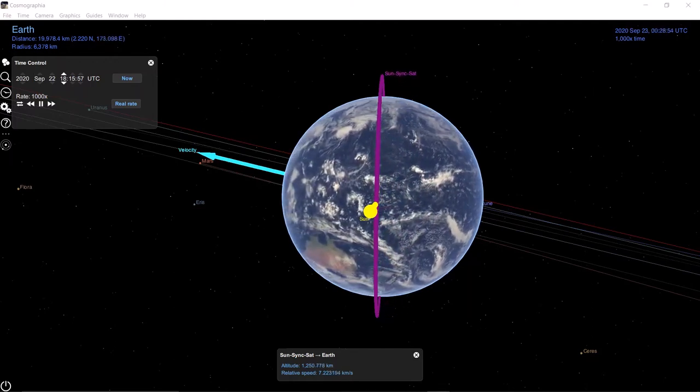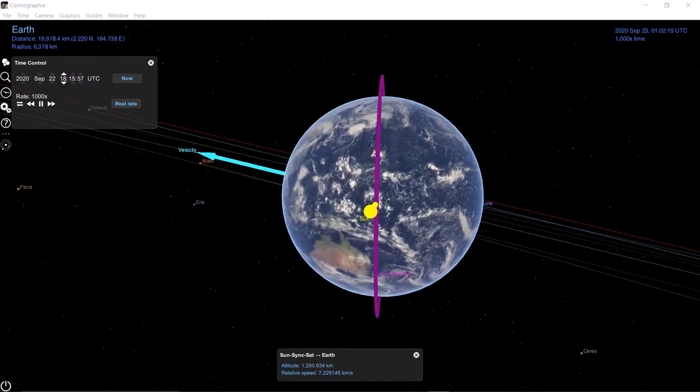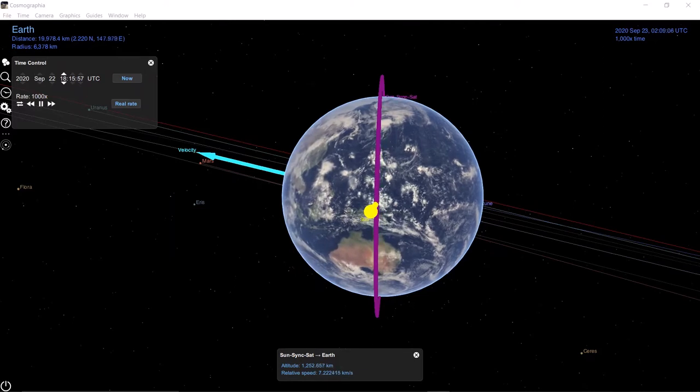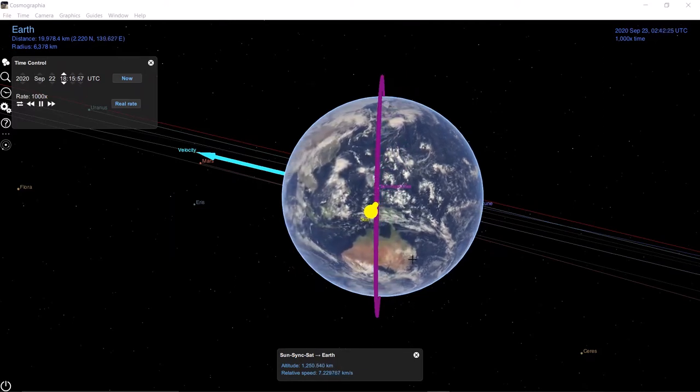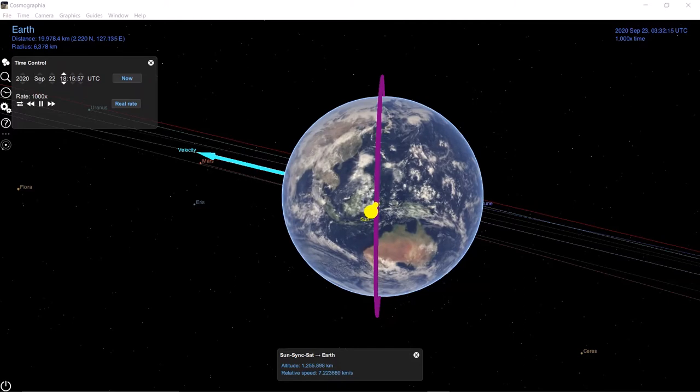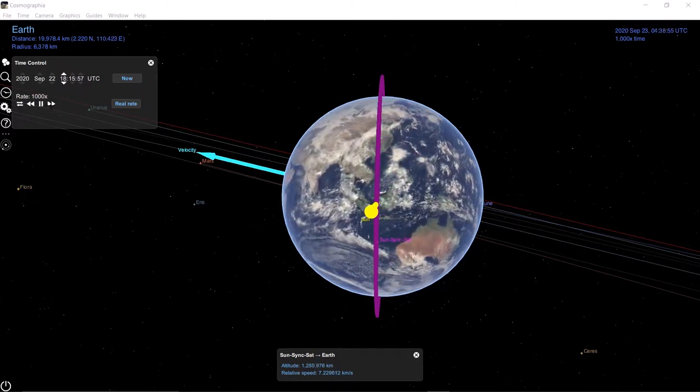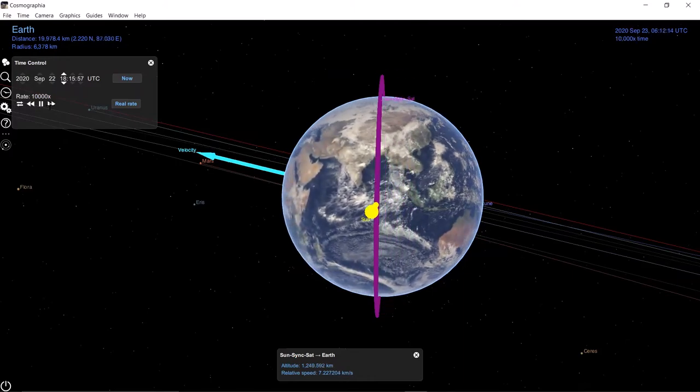So what we have here is a 1260 roughly kilometer altitude, 100.7 degree inclination, sun-synchronous orbit, and the yellow vector here is pointing to the sun, and the blue vector here is a velocity vector of the Earth with respect to the sun. Now watch what happens when we speed up the time here in the simulation.